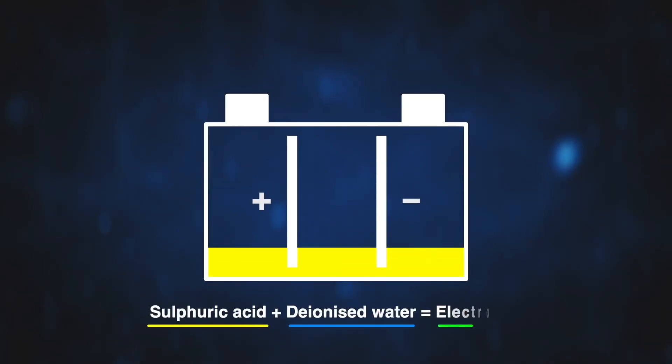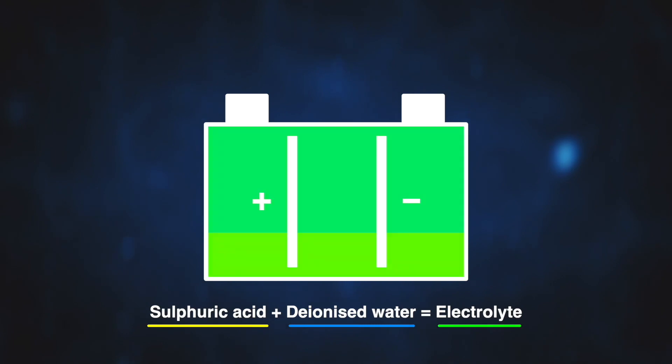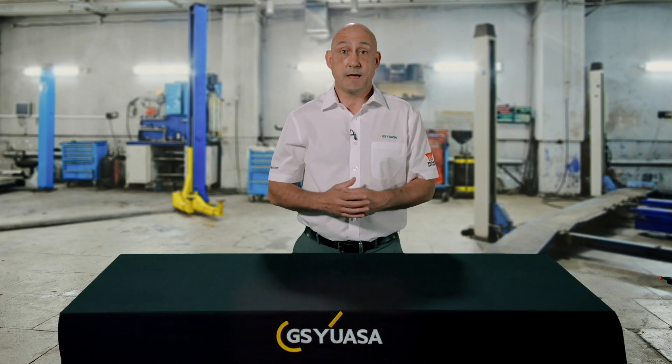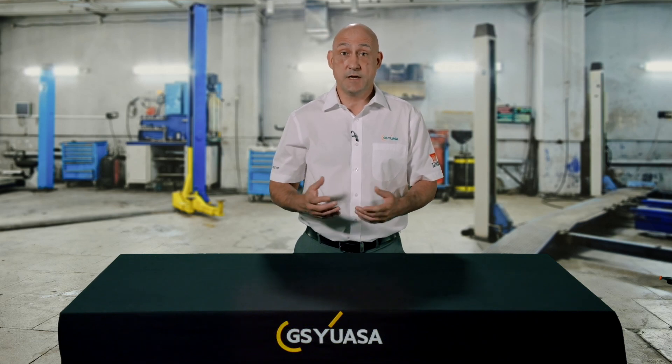Positive and negative plates are made from two different lead compounds suspended in an electrolyte solution of sulphuric acid and deionised water. Unlike the lemon, the chemical reaction that produces electrical energy in a lead acid battery is reversible. This means that the battery can be recharged after use, and is known as a secondary type battery as it can be repeatedly recharged.